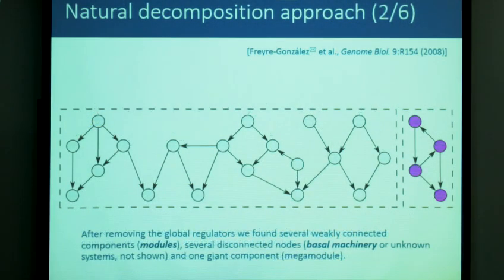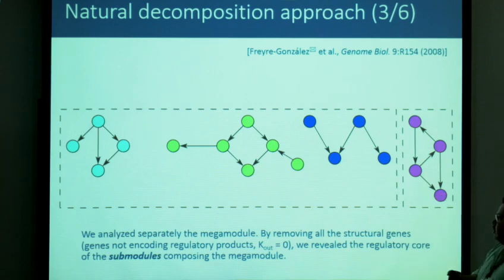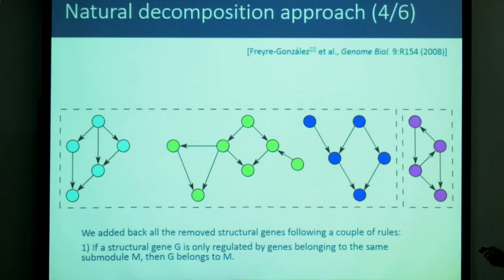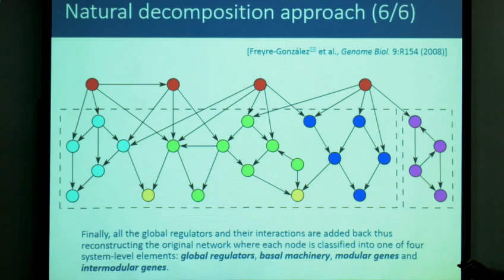After removing all structural nodes, we have a set of regulatory cores. We then recover the full network by adding back all removed nodes using a set of rules. Structural nodes regulated only by regulators in the same module are part of that module. If a structural node is regulated by regulators in different modules, it is an intermodular gene enabling overlapping of modules. Finally, we add back all global regulators, and each node is classified into one of four possible system-level elements: global regulators, modules, intermodular genes, and basal machinery.